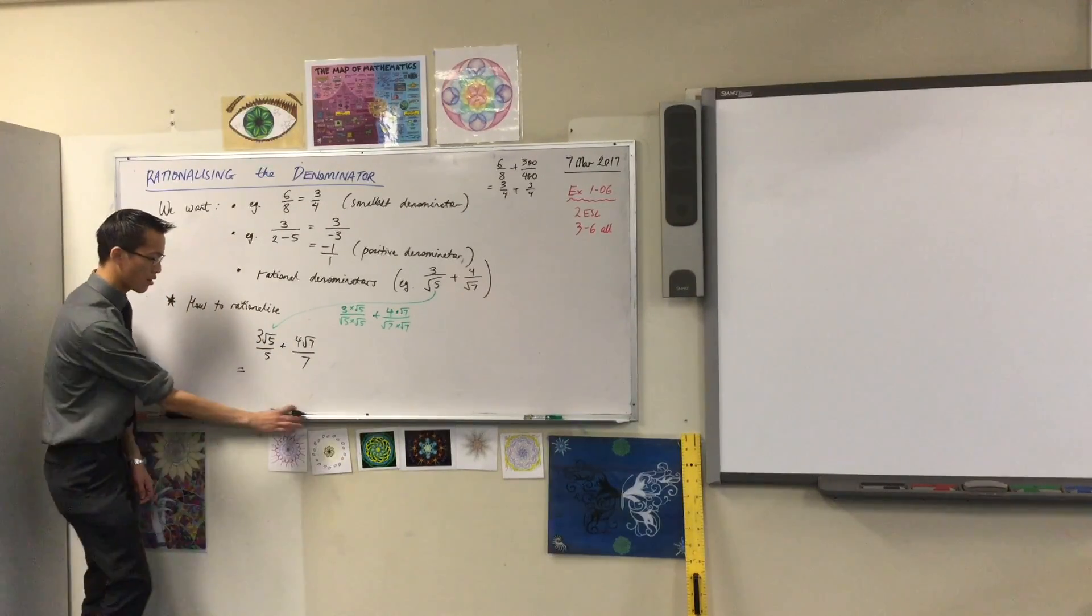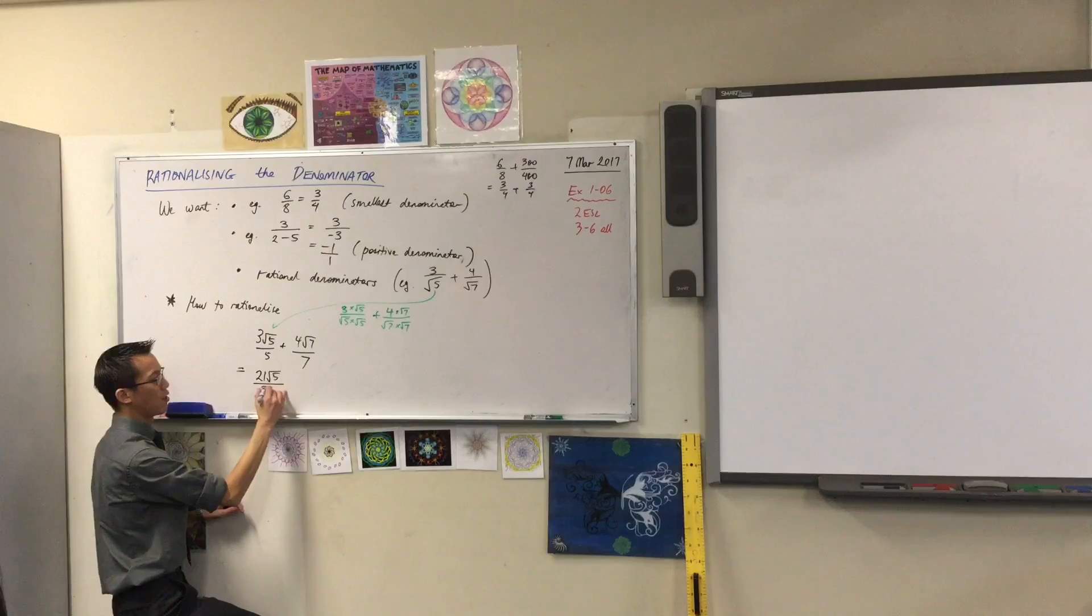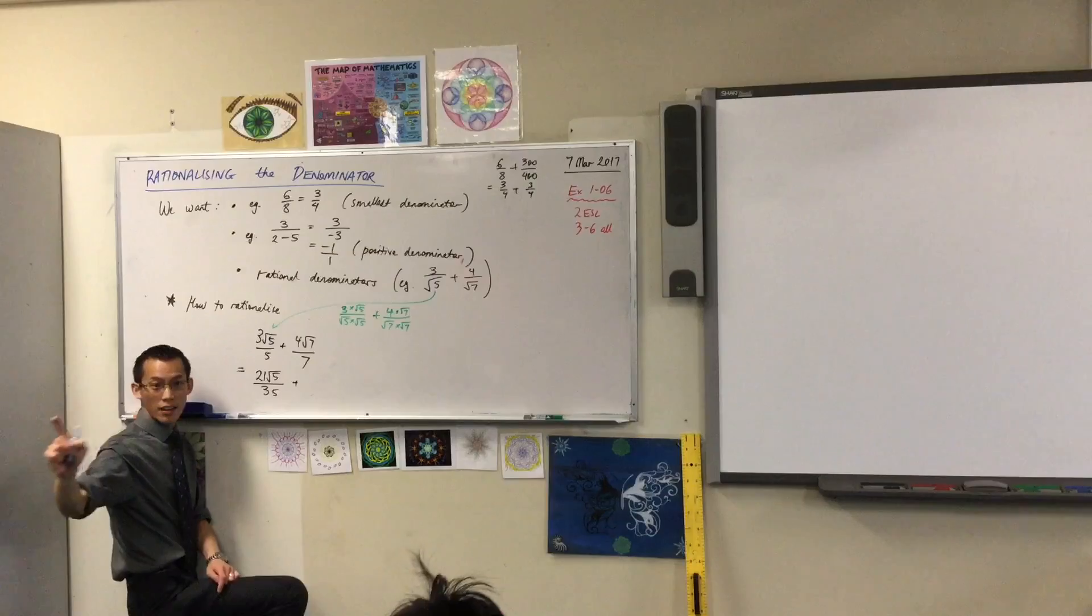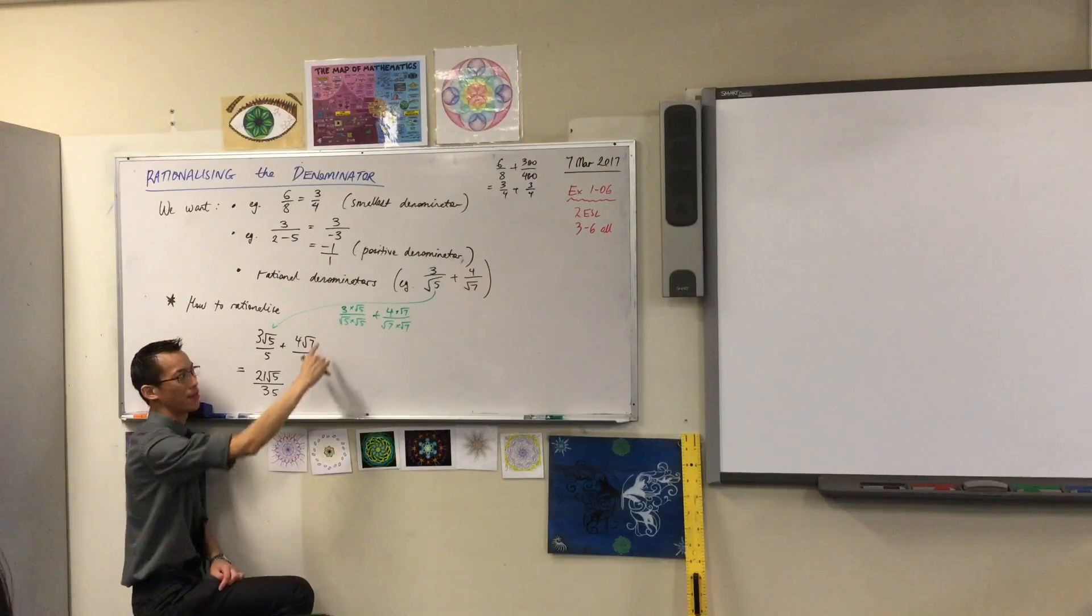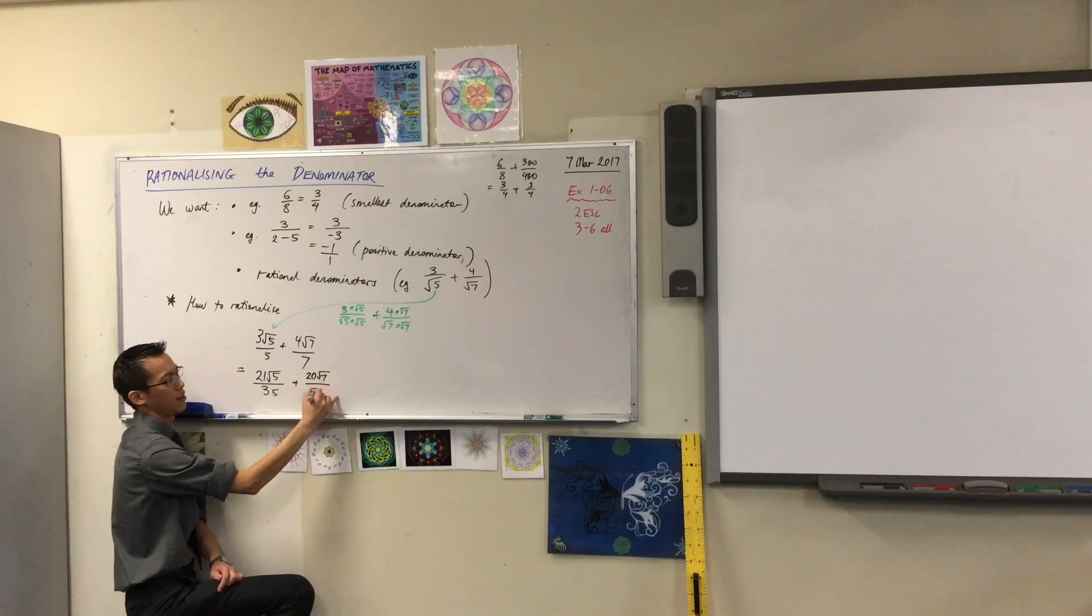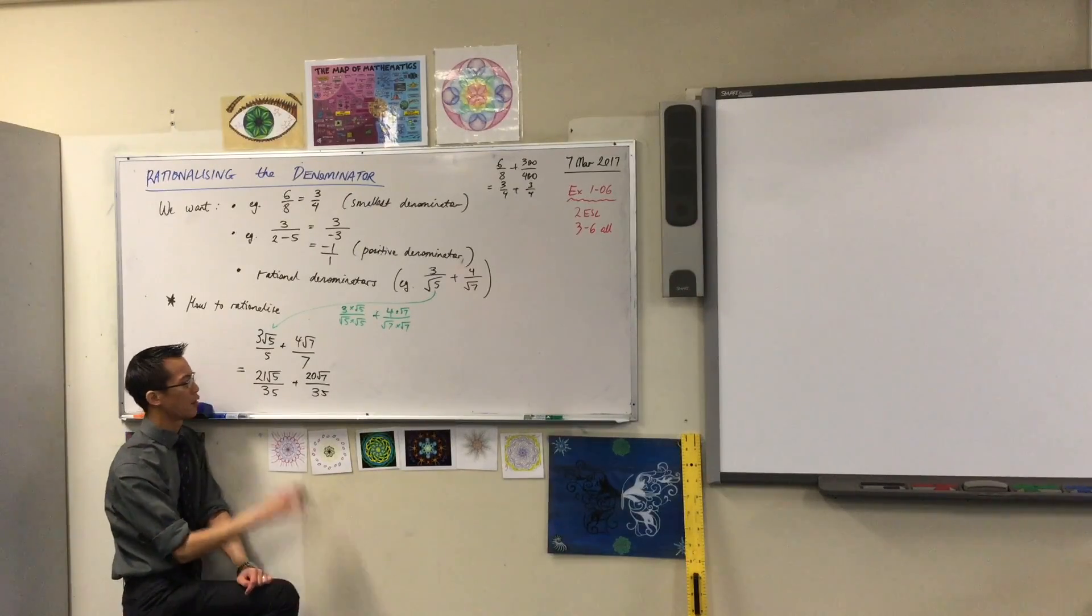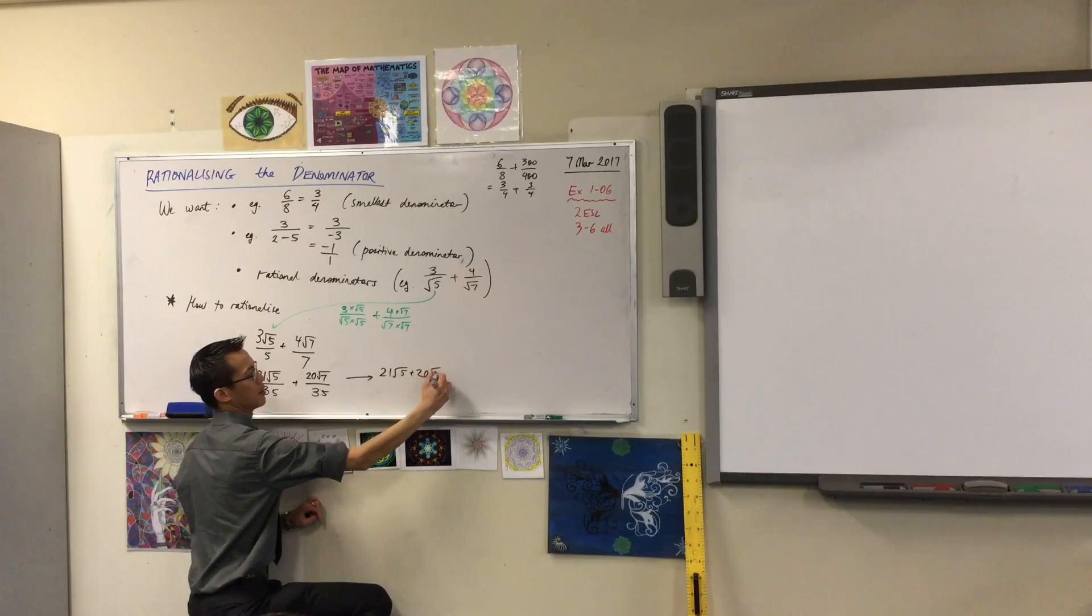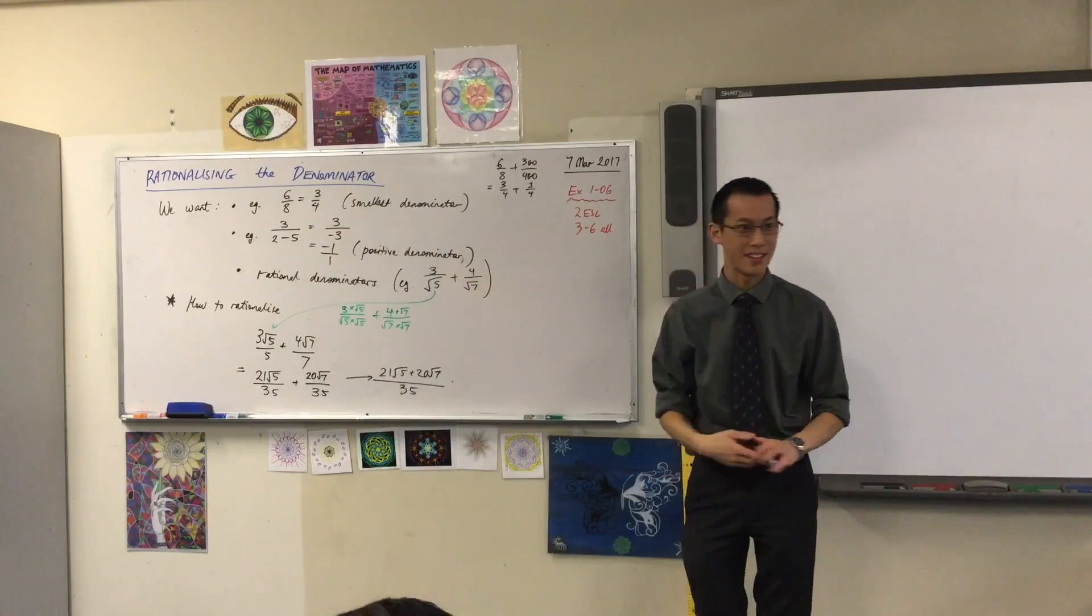So I'd multiply this one by 7 over 7, so it would become 21 root 5 on 35. What do I multiply this one by? 5. Yes, but no. I'm actually multiplying by 5 over 5. Do you agree? Because otherwise I'm actually changing the fraction. But 5 over 5 is just 1, so it doesn't change the value. So that's going to become 20 root 7 on 35. Is that okay? Top and bottom. I've run out of space on the bottom of my board here, but now that they're both over 35, I can just combine those two things at the top.